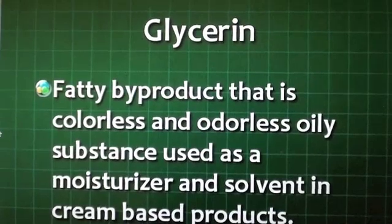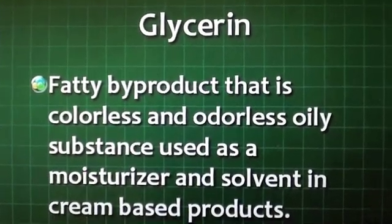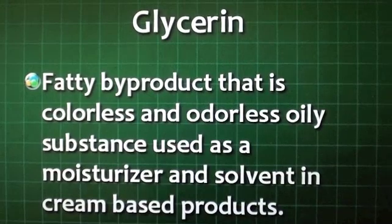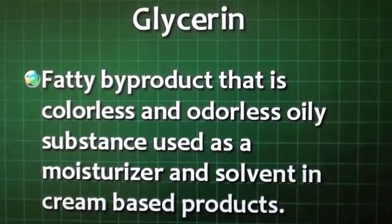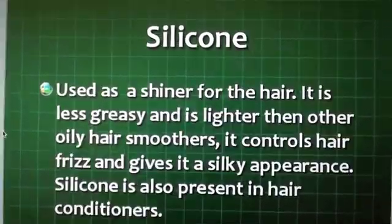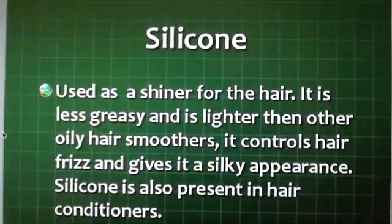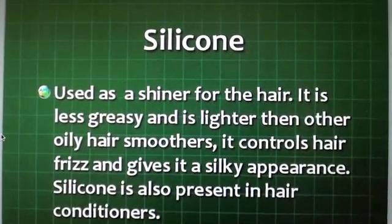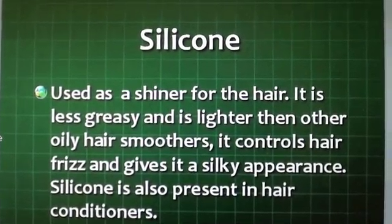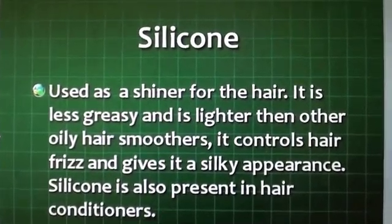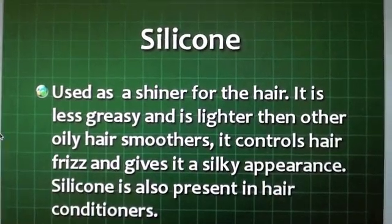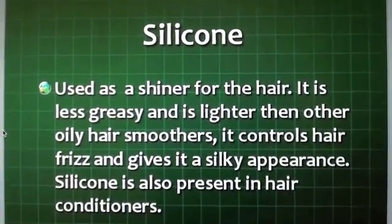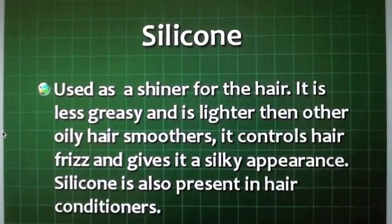Glycerin is a fatty byproduct that is colorless, odorless, and oily — used as a moisturizer and solvent in cream-based products. Silicone is used as a shiner for the hair. It is less greasy and lighter than other oily hair smoothers, controls hair frizz, gives a silky appearance, and is also present in hair conditioners.